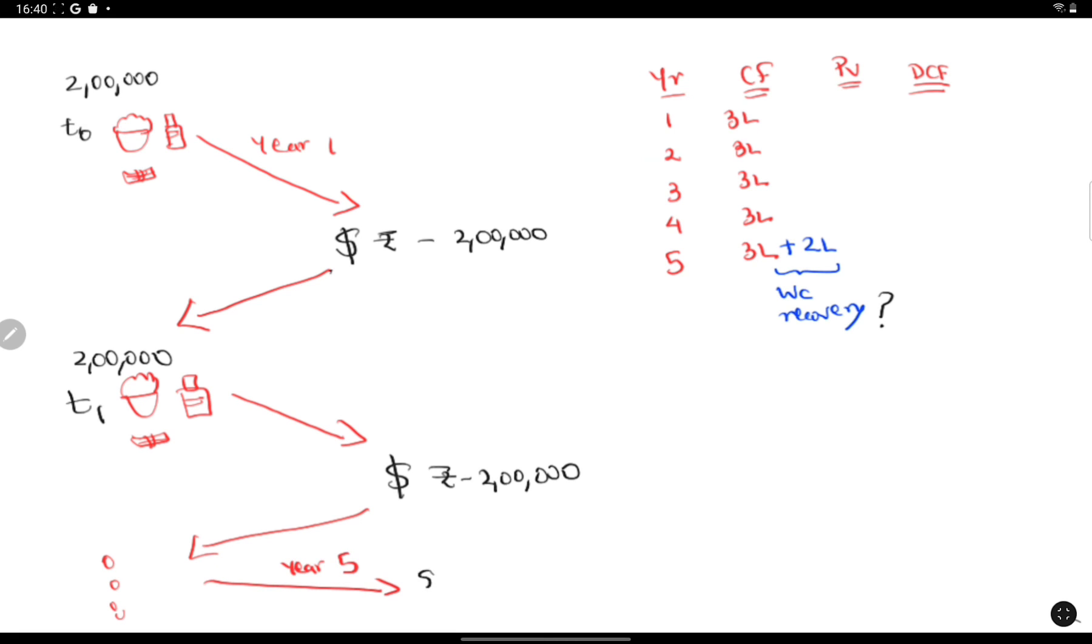That is, the 2 lakhs that results in a cash inflow at the end of year 1 through working capital recovery is reinvested again in the business for working capital needs of the second year. This cycle continues until the last year where the working capital recovery, no longer being reinvested, results in an actual cash inflow for the business.